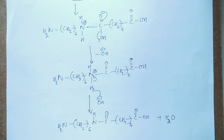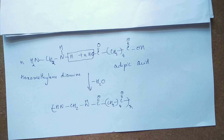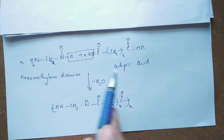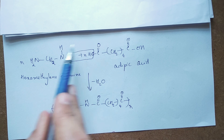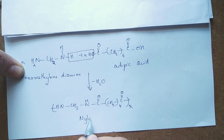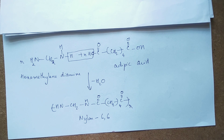For a 12th standard student, mechanisms are usually not asked in the exam. In the exam, you may write only that hexamethylene diamine combines with adipic acid, a molecule of water is lost, and nylon 6,6 is obtained as the product. That is about today's video — thank you so much for watching.